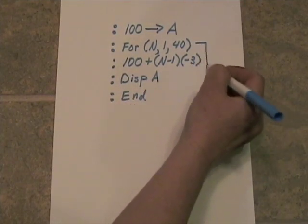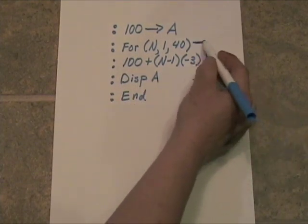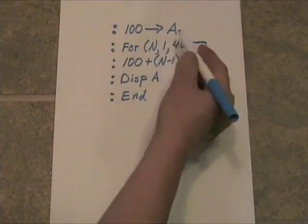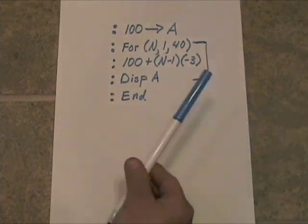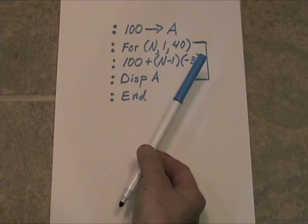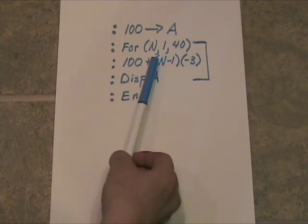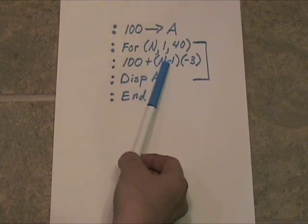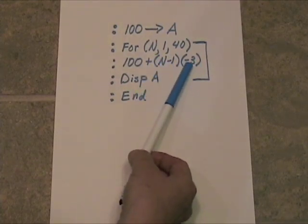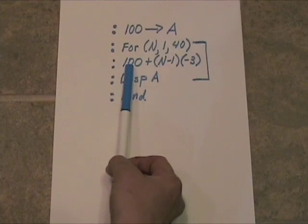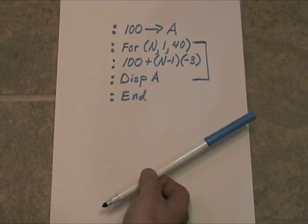So right here is your loop. These three lines of code are going to go over and over 40 times. Now, the first time through the loop, let's see what will happen. If we put a 1 in there, 1 minus 1 is 0, 0 times negative 3 is 0. So by George, you're going to get 100. It will work right there like that.